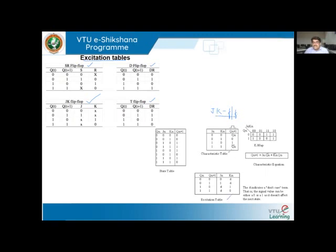To obtain an excitation table, we must start with the characteristic table, also known as the truth table. The truth table of the JK flip-flop tells us: for a given input and previous output, what is the next state output? We call the previous output Qn and the next state output Qn+1. Most flip-flops are edge-triggered or pulse-triggered.